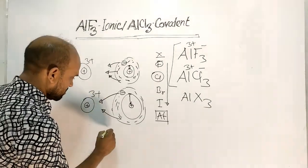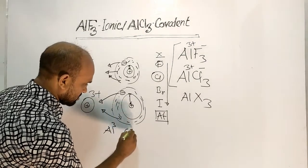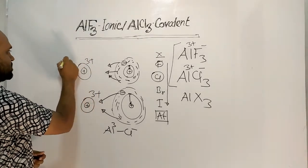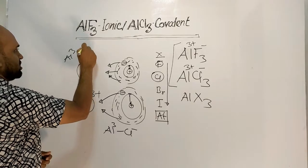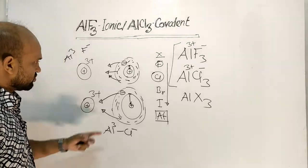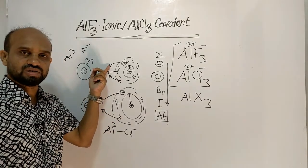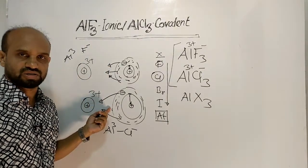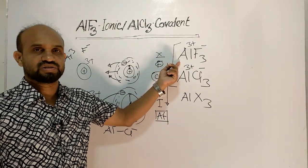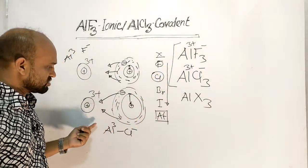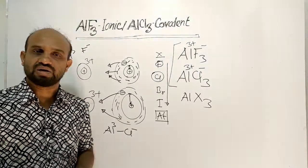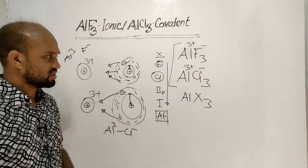That is why the bond between aluminium and the chloride ion turns into a covalent bond, but the bond between aluminium and the fluoride ion remains ionic. Because of low polarization in fluoride, aluminium fluoride remains ionic, and because of high polarization in chloride, aluminium chloride turns into a covalent compound.